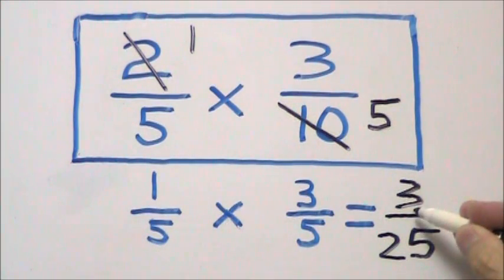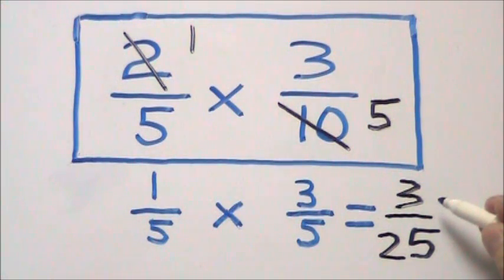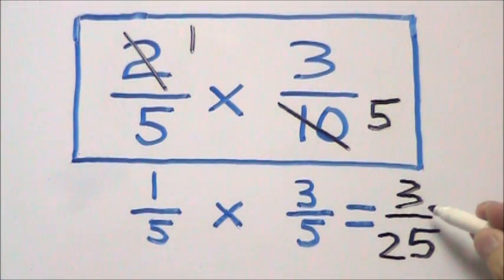For a final answer of three twenty-fifths. Now we know we don't have to simplify any further because there are no other factors that go into both three and twenty-five.